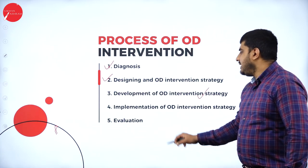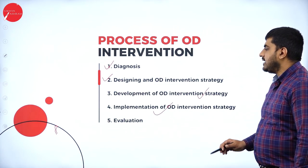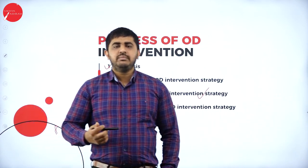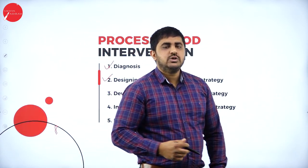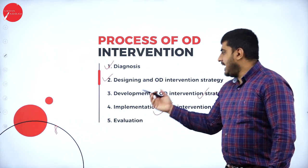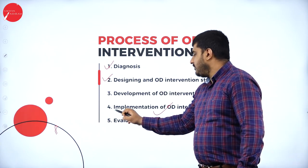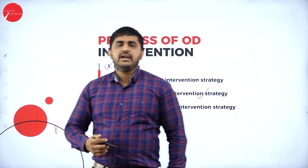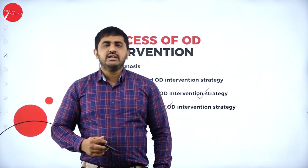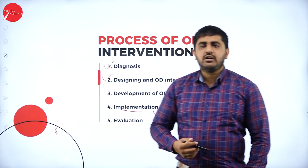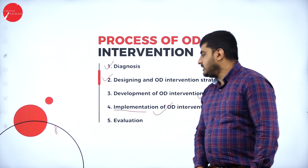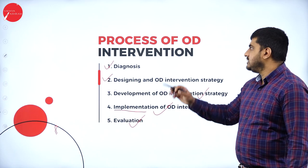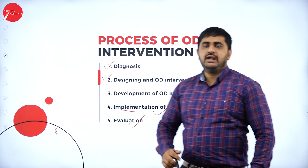Fourth is implementation of the OD intervention strategy. After developing the strategy, it has to be implemented — whatever strategy was formulated in the third step will be implemented. After implementation, to check whether the interference is a success or not, it has to be evaluated. So evaluation takes place in the last step. This is the process of OD intervention.